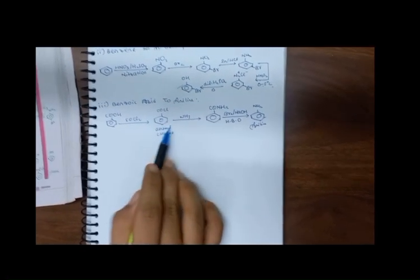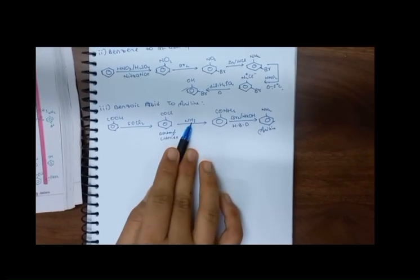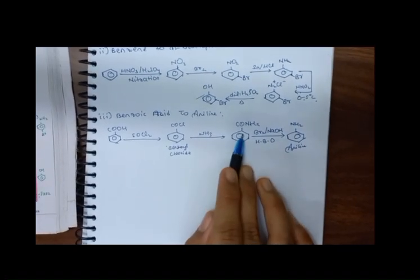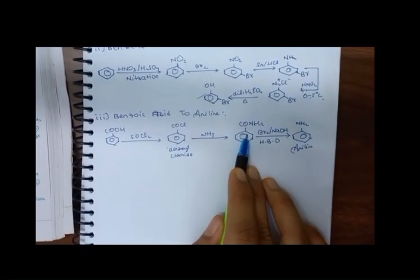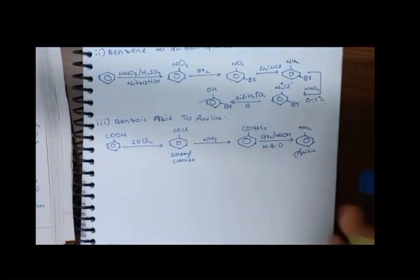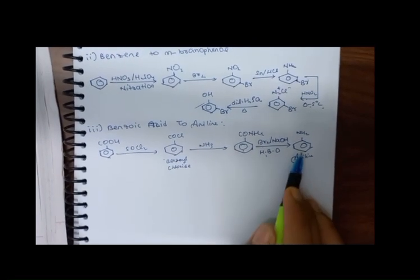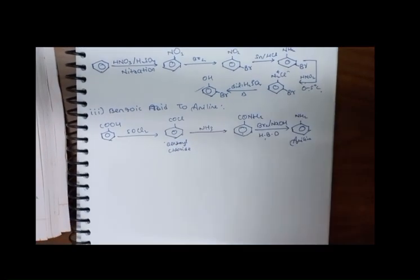To recap: we took Benzoic Acid, treated with SOCl2 to get Benzoyl Chloride (not Benzoyl Fluoride — Benzoyl Chloride). Treating with Ammonia gave Benzamide, and after Hoffmann Bromide Degradation we got Aniline. Next reaction.